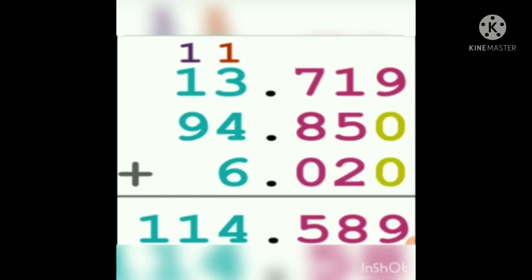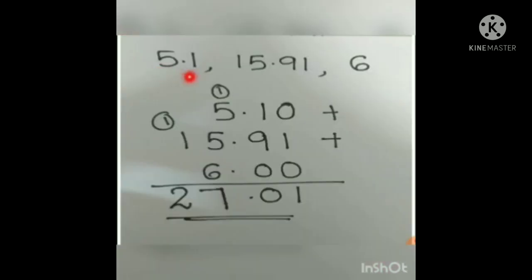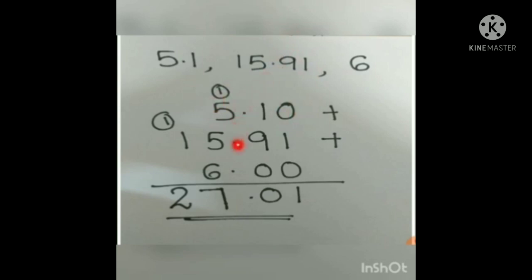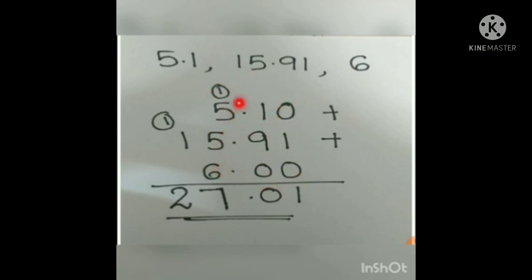The same normal addition method applies. One thing to keep in mind: here we have three numbers — 5.1, 15.91, and 6 — for adding. The number 6 is not a decimal number, so you have to be careful when writing it. We write 5.10, and applying the concept of like decimals, we make everything two decimal places after the decimal point. Since 6 is a whole number, its place value is units — write it before the decimal point as 6.00.